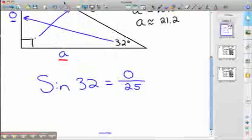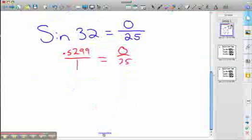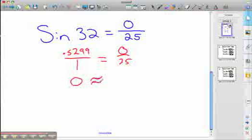So .5299 over 1 equals O over 25. Cross multiply. So 1 times O is O. .5299 times 25 is approximately equal to 13.25. And again, use significant digits to solve everything. Thanks for listening. I hope this helps you.